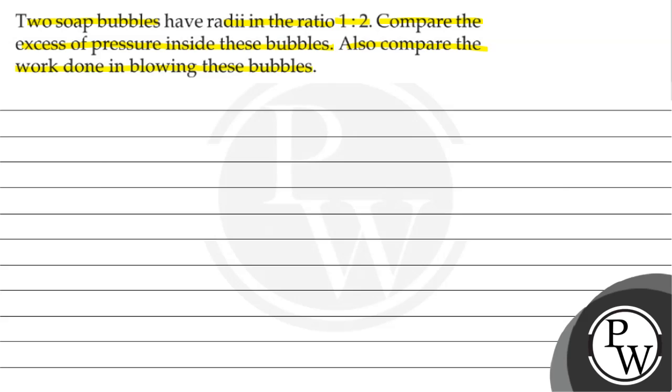So you have two soap bubbles with radii ratio given as 1 is to 2, and we have to find the excess pressure inside ratio and also when these soap bubbles are blown, the work done ratio. First, we have to look at the question and which key concept to use.